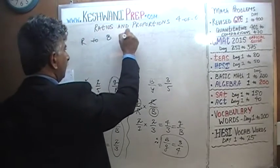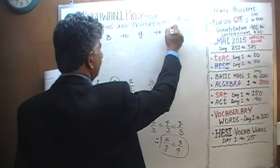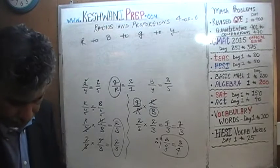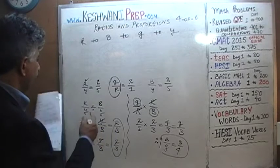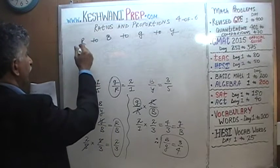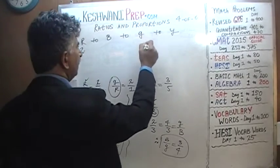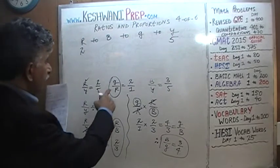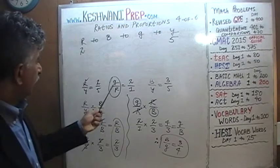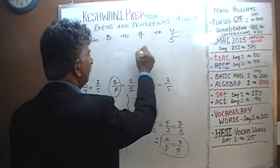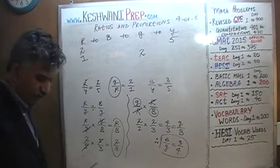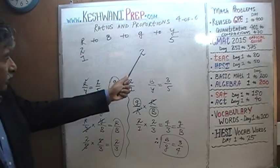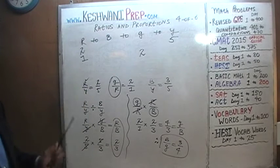Let's make a list of everything we have: four colors — red, blue, green, yellow. We start plugging in values. The first ratio is red to yellow: 2 to 5. So red gets 2 and yellow gets 5. The second ratio is green to red: 2 to 1. Green is 2, red is 1. But we have to stop here.